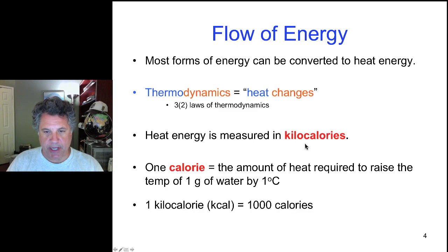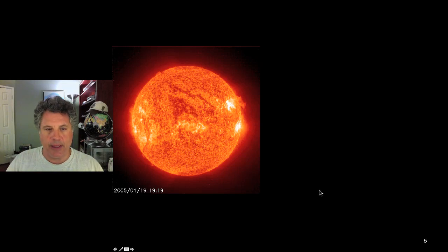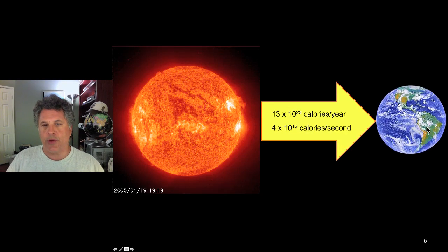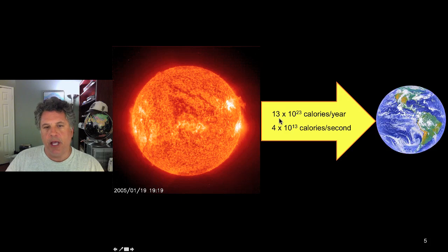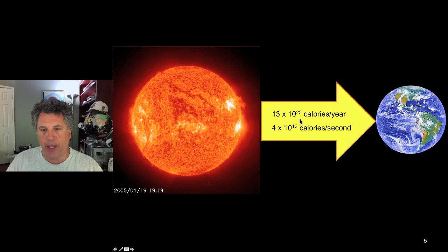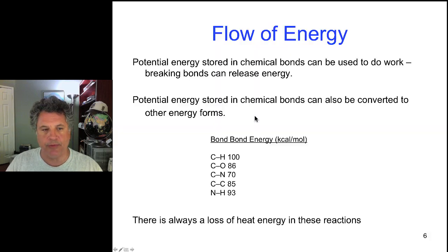And to get a perspective on this, let's look at the energy flow from the sun to the earth. The earth acquires from the sun 13 times 10 to the 23rd calories per year. It's hard to imagine a number that large. Or it's hard to imagine this: 40 million billion calories per second arrive at the earth from the sun in the form of light and heat. And that's what keeps our biosphere going.